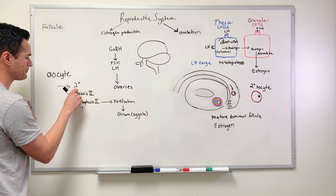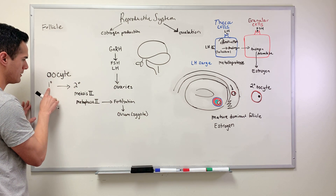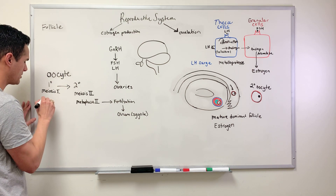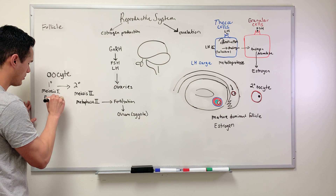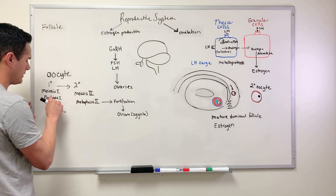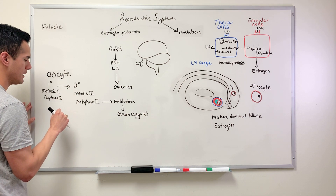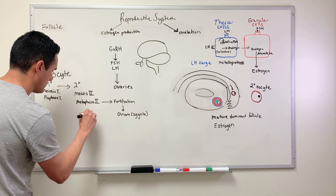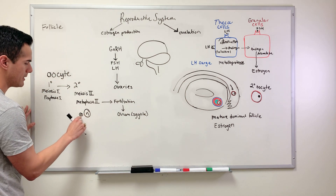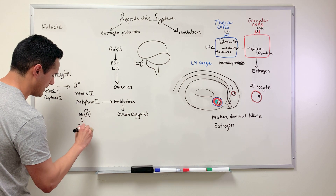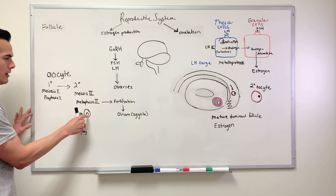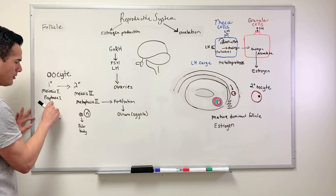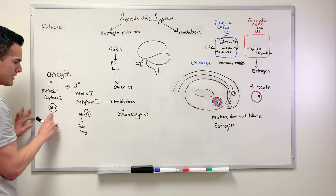The secondary oocyte comes from a primary oocyte. The primary oocyte is stuck in meiosis 1, more specifically at prophase 1. The difference between the primary and secondary oocyte is ploidy: the secondary oocyte produces two haploid cells — the small inactive polar body and the mature secondary oocyte — while the primary oocyte in prophase 1 is a single diploid cell.